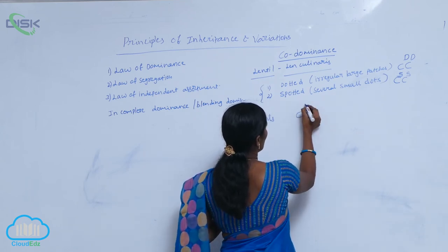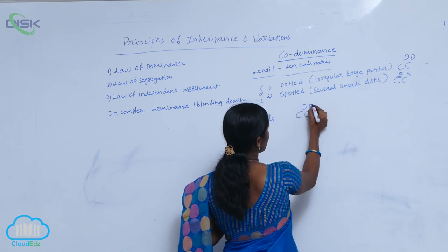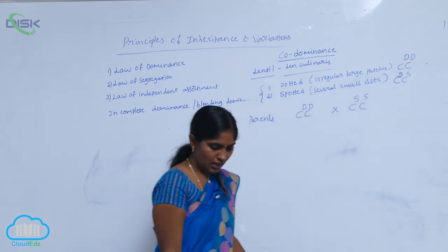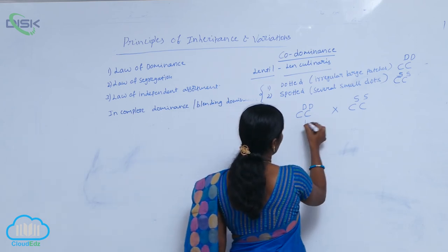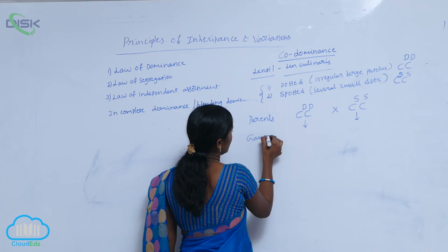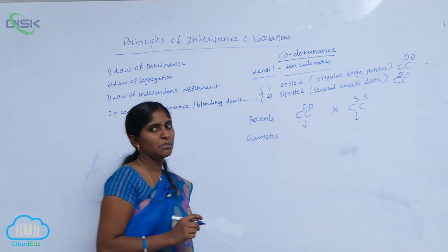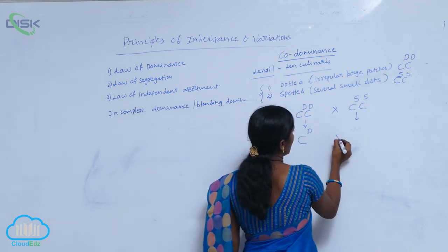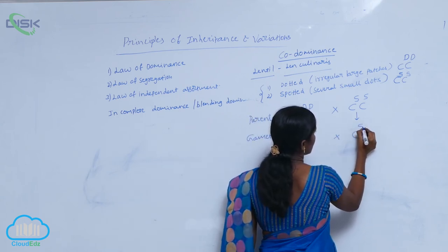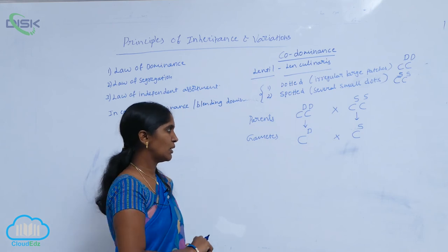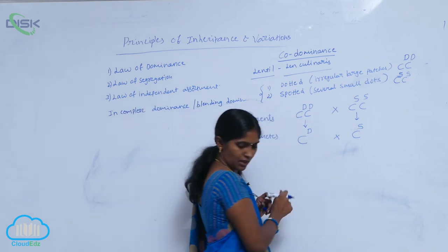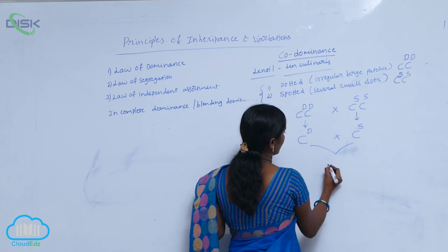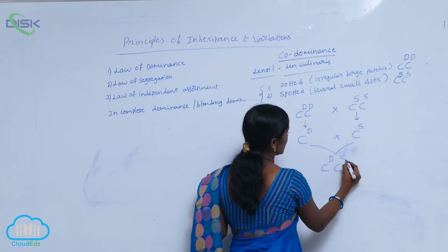The selected parents are homozygous pure lines showing dotted and spotted characters. One parent is the dotted one — C^D C^D — crossed with the spotted parent C^S C^S. During gametogenesis, gametes are released. Because they are homozygous, only a single type of gamete is produced from each parent: C^D from the dotted parent and C^S from the spotted parent. This results in the F1 filial generation with genotype C^D C^S. All F1 individuals are identical.